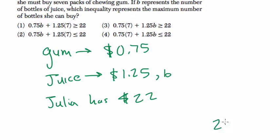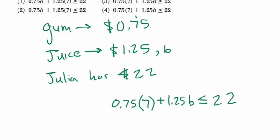Okay, so she's got $22. So the amount of gum is 75 cents per pack of gum and she has to buy seven, I think it says. Yes. Then when we add some amount of bottles of juice that each cost $1.25 times B, that total amount has to be less than or equal to 22. Alright, let me just show you what I mean.